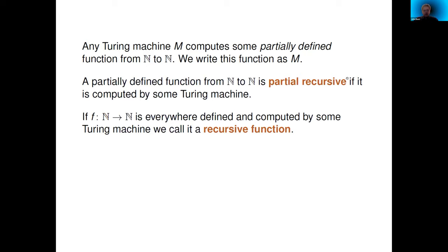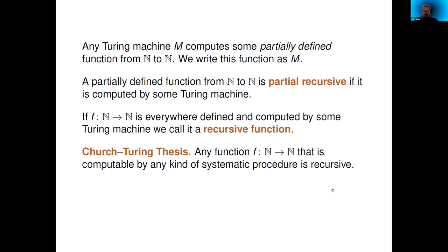We say that a partially defined function from natural numbers to natural numbers is partial recursive if it's computed by some Turing machine. If a function is defined everywhere and computed by a Turing machine, it's called a recursive function. Church and Turing came up with their thesis — not a theorem, but a claim — that any function from the natural numbers to itself that you can compute by any systematic procedure whatsoever is actually computable by a Turing machine, and so it's recursive.